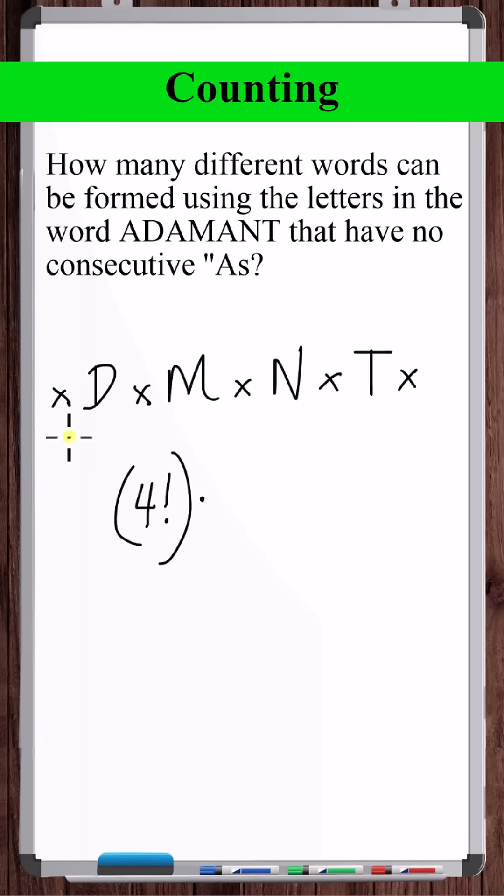But now how do we count the number of ways we can distribute the A's within the slots? We just think about it this way. We've got these three A's. This is like a separate counting problem. We've got these three A's, and we can pick from five slots to assign to these A's.